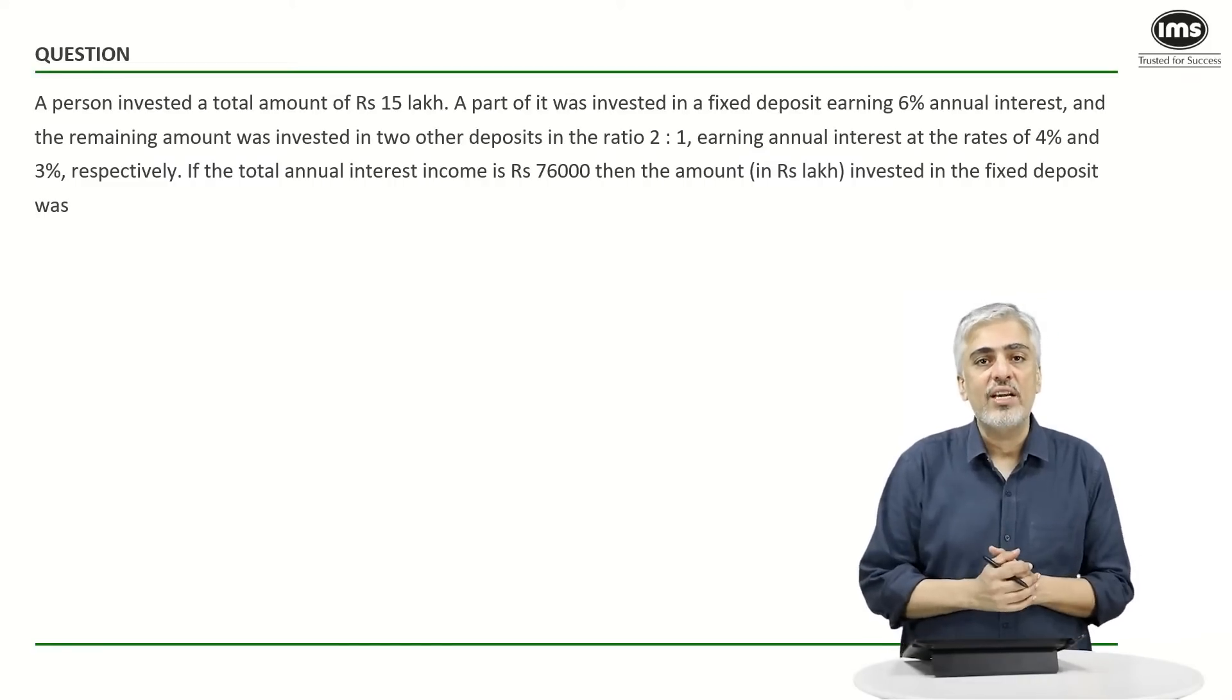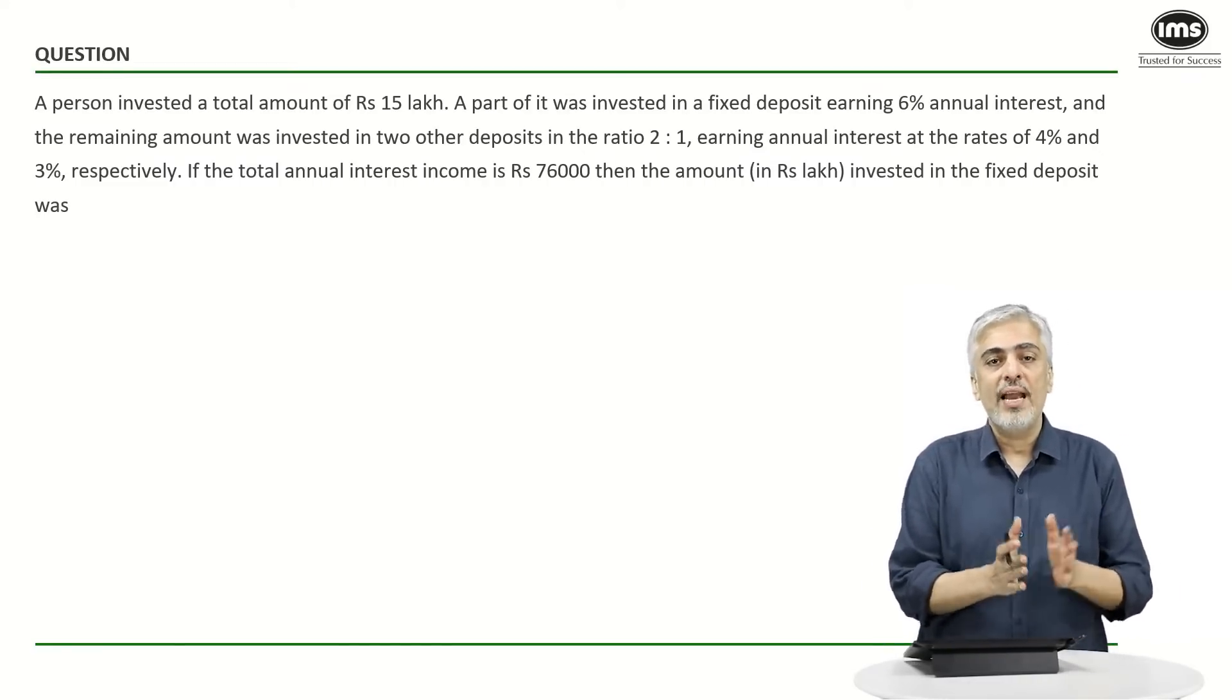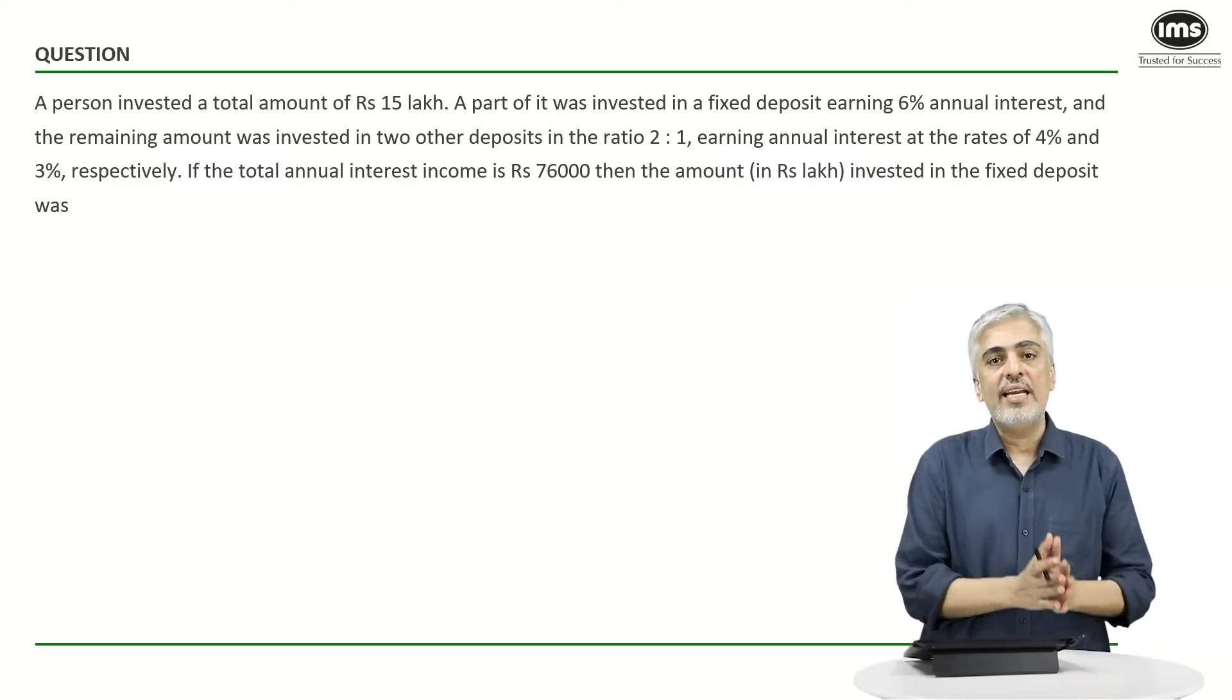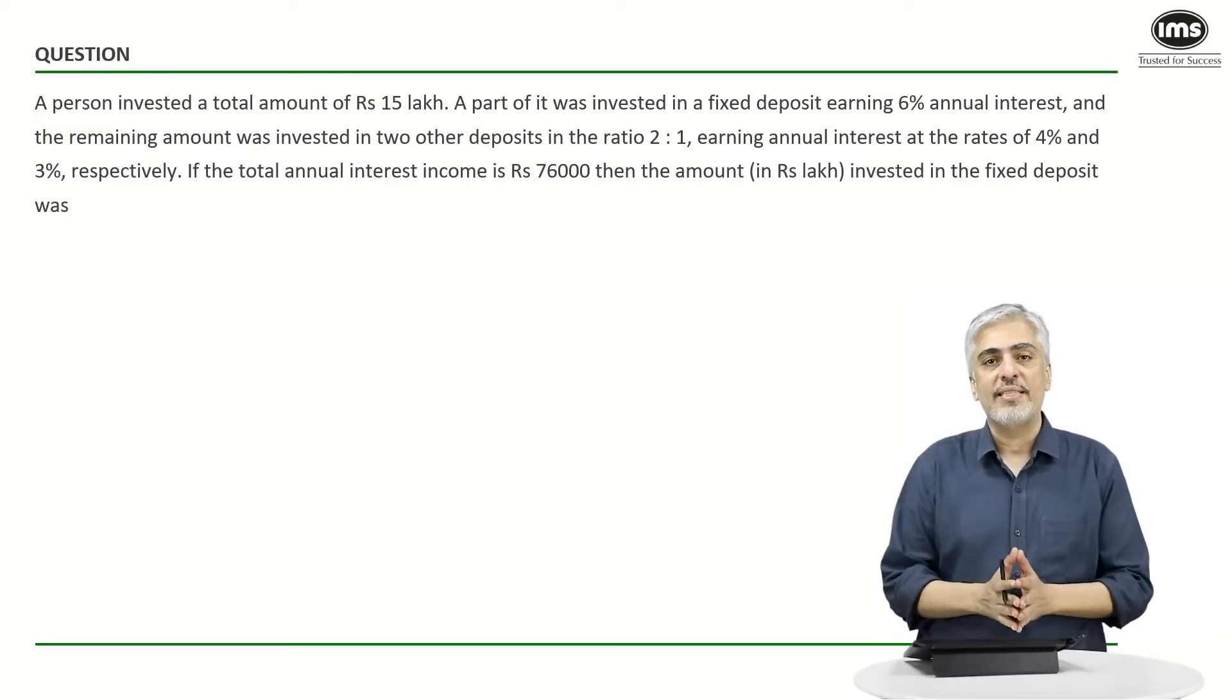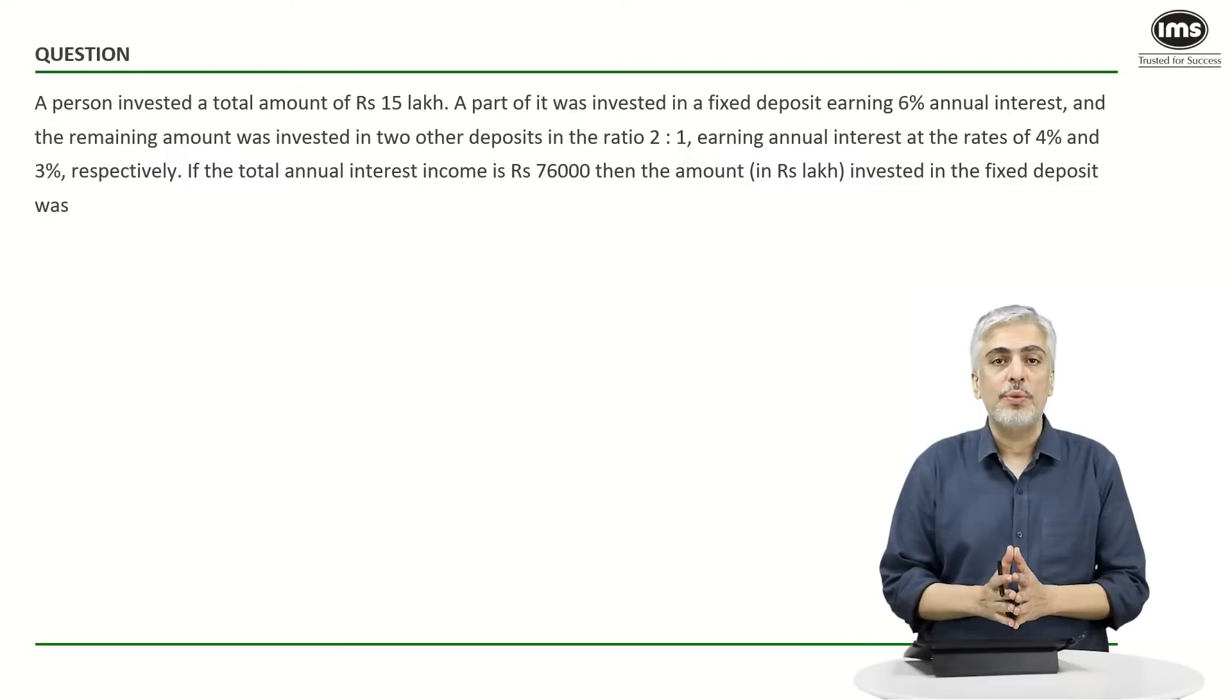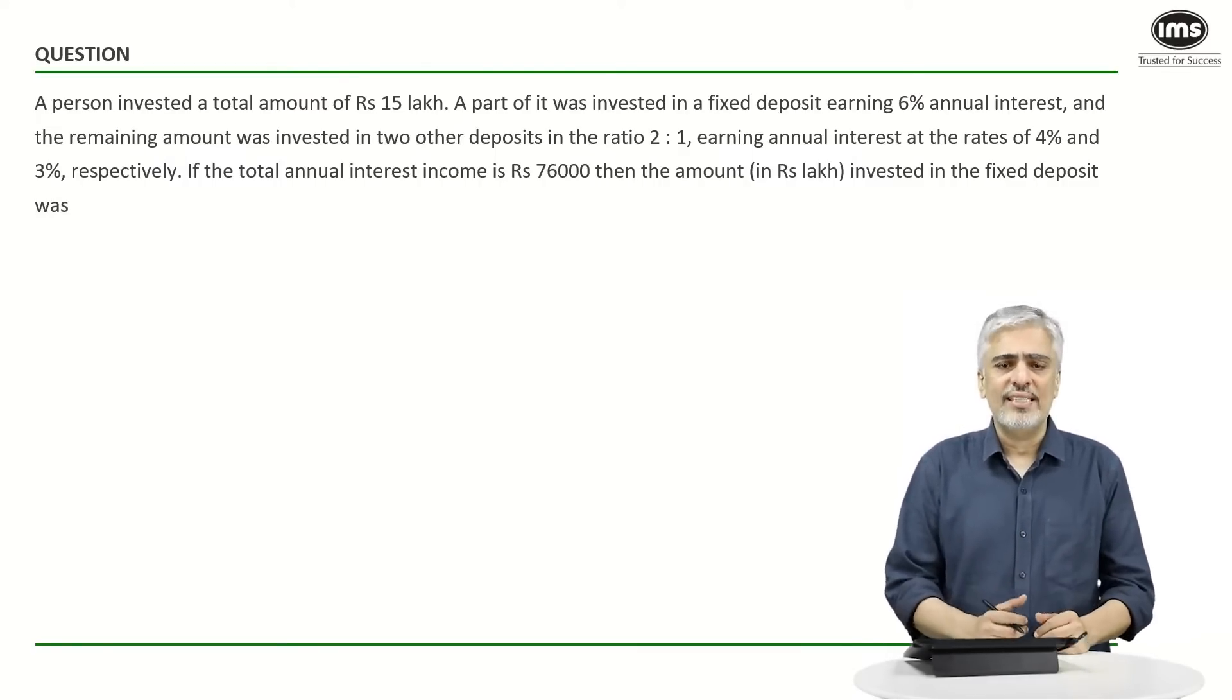Now if you look at this question, we see that a person invested 15 lakh rupees, out of which he has invested part of it at 6% and the remaining part he has broken between the ratio 2:1 and invested at 4% and 3%. The total interest he earns is 76,000 rupees. The question asked is what was the amount invested at 6%?